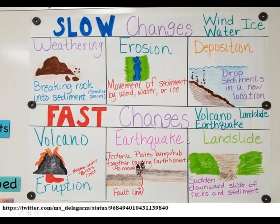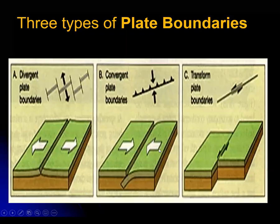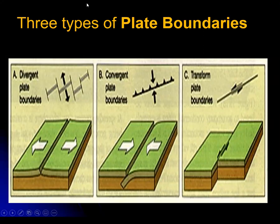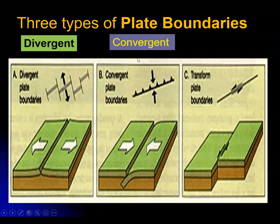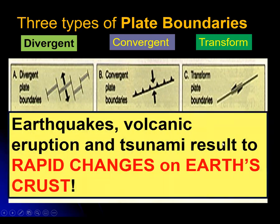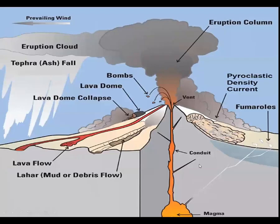The three types of plate boundaries result in changes on Earth. These plate boundaries happen because of the movement of tectonic plates, brought about by the convection currents happening in the mantle. We'll be learning more about convection currents as we progress in our discussion on plate tectonics. The three types of plate boundaries are: divergent — moving away from each other; convergent — moving towards each other; and transform — sliding past each other. Earthquakes, volcanic eruptions, and tsunami result in rapid changes on Earth's crust.